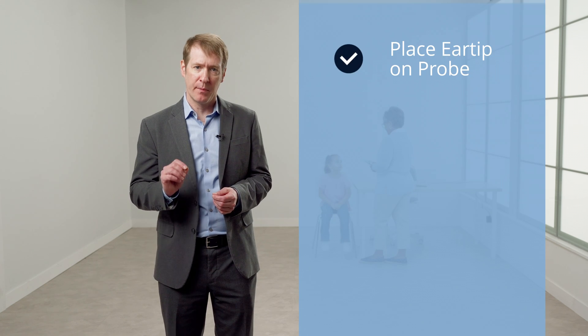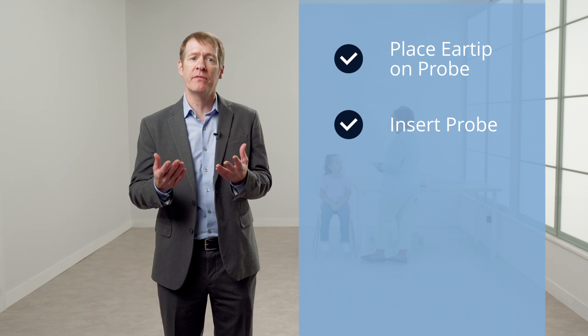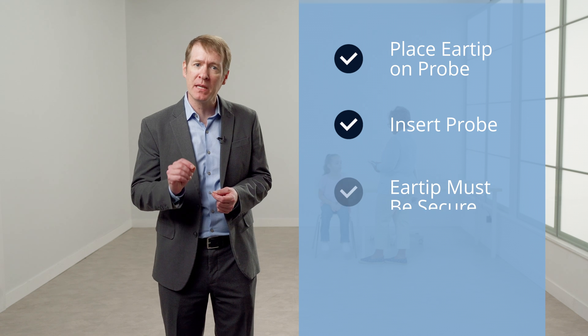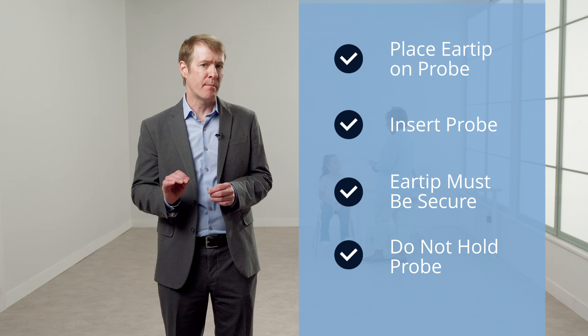For older children and adults, it's a good idea to tell them what to expect during the OAE test. You can inform them that you are going to check how their ears are working by presenting sounds to their ears with the probe, and that they just need to sit quietly for a few seconds. They do not need to pay attention to the sounds or tell you that they heard it. For all patient ages, place the ear tip firmly on the probe. Once you have inserted the probe into the patient's ear, make sure the ear tip is still firmly in place and will not easily fall out. Do not hold the OAE probe during the measurement because this can introduce noise that may interfere with the testing.